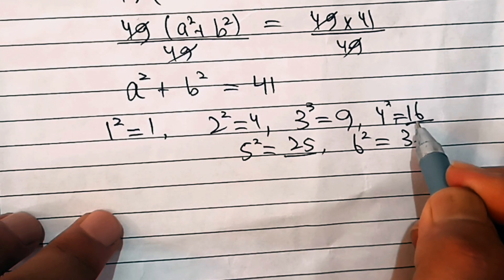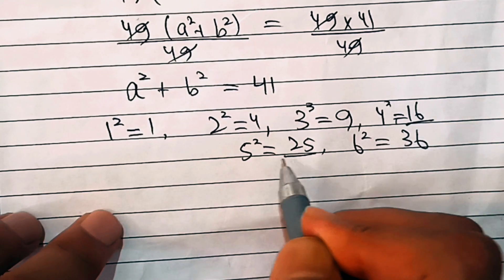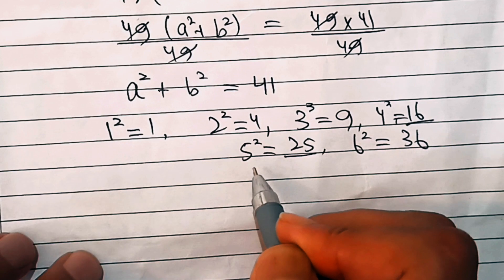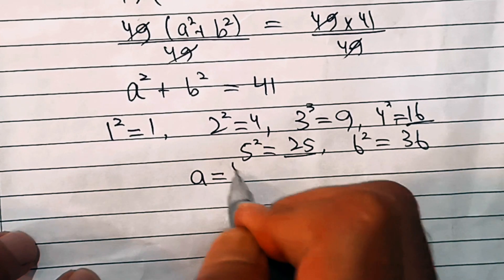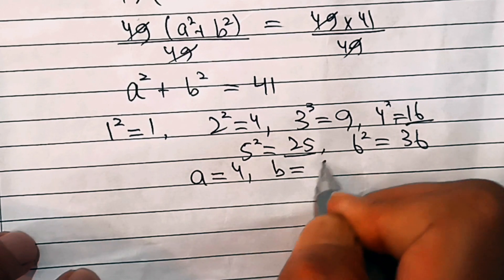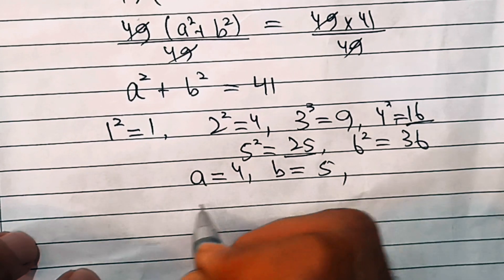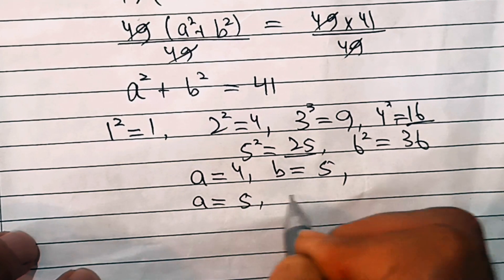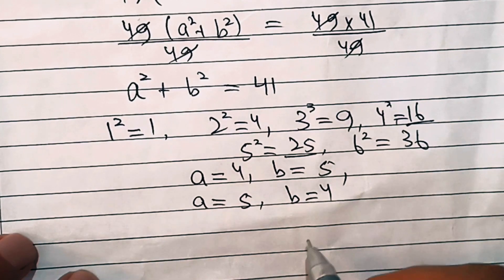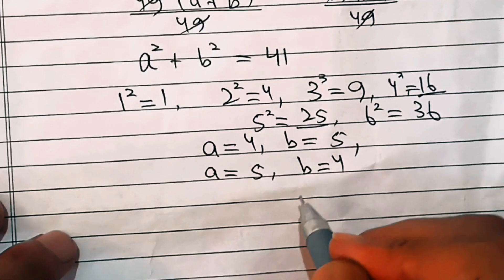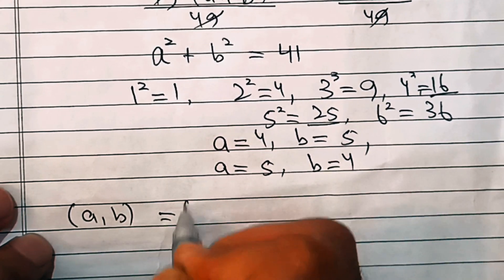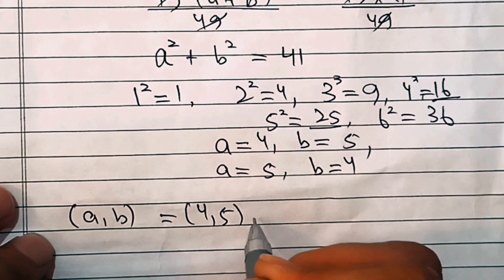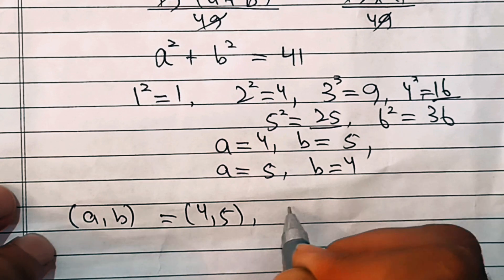But 16 is square of four and 25 is square of five, so we have a equal to four, b equal to five, or a equal to five, b equal to four. So the solution pair is a comma b equal to four comma five or five comma four.